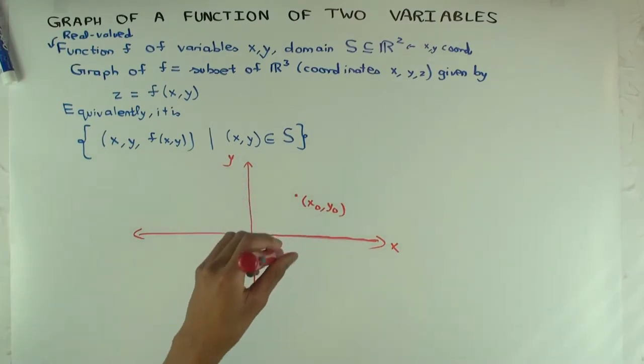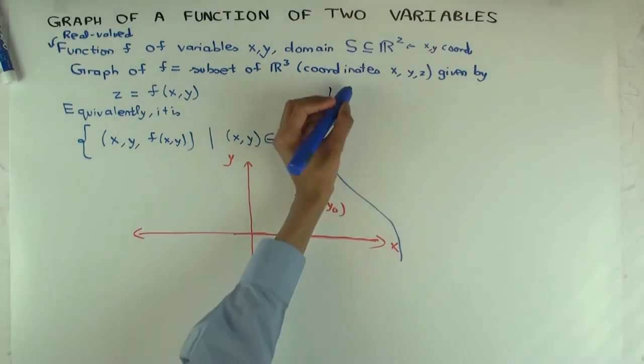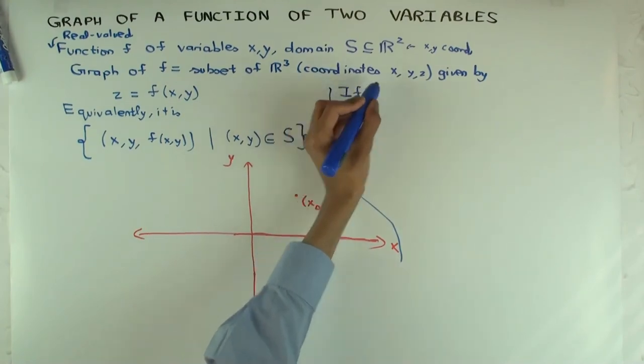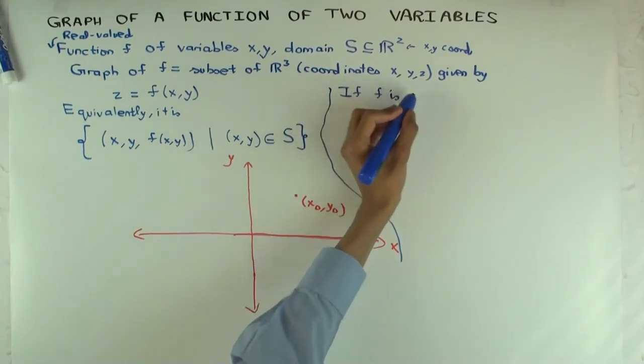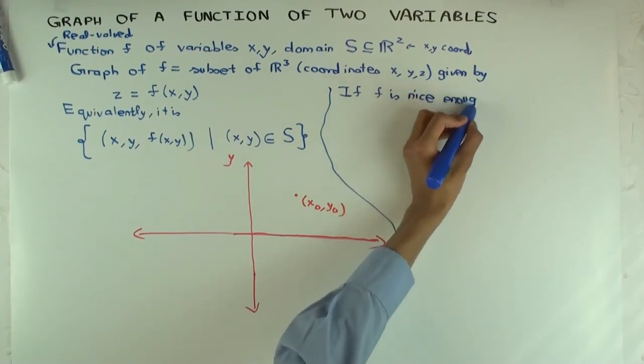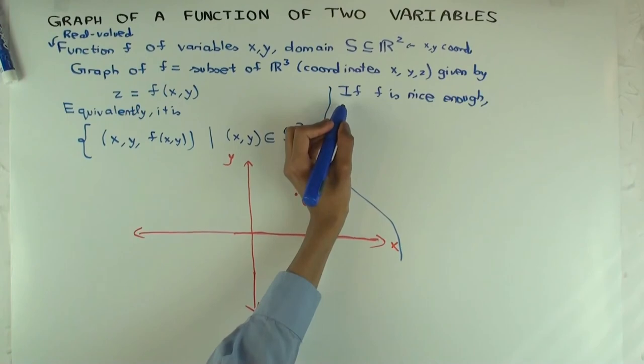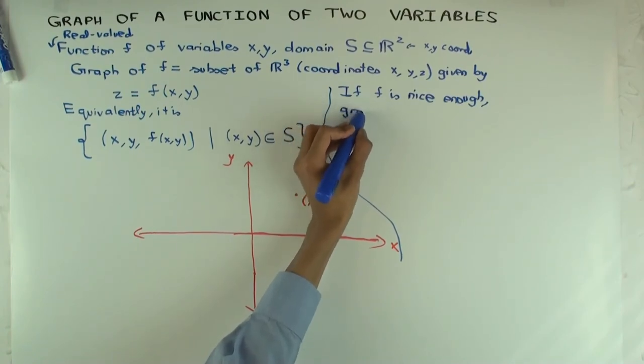So for every point in the domain here, you'll get one point in that line which is parallel to the z axis. You'll get one point on the graph which is in that line. So what will the graph look like pictorially? If the function is nice enough, then the graph looks like a surface. So if f is nice enough—and by nice I mean something like differentiable enough times—then it will be a surface, and the graph of f is a surface.